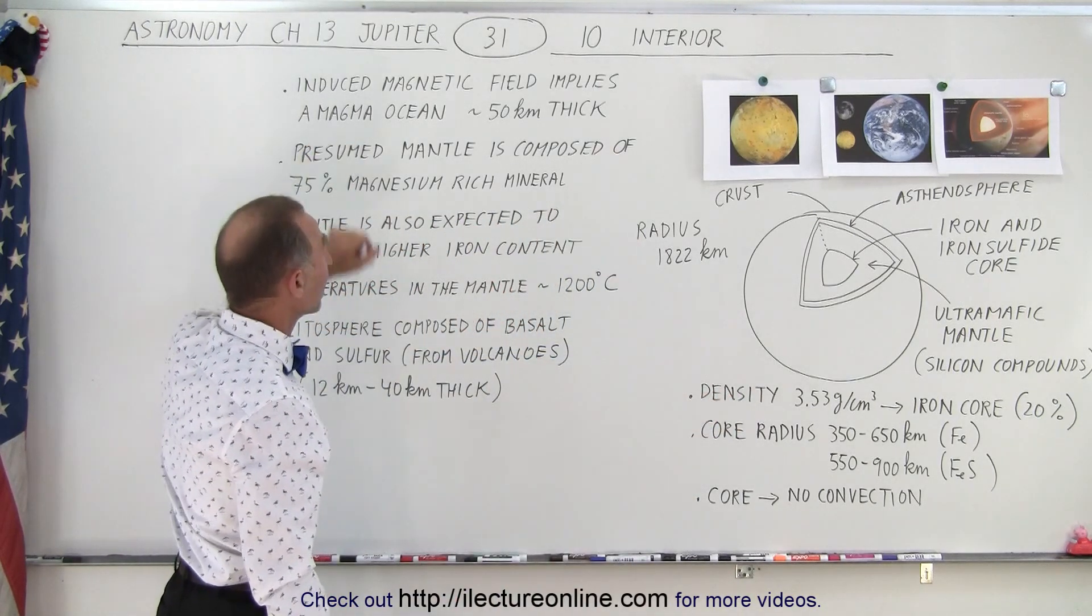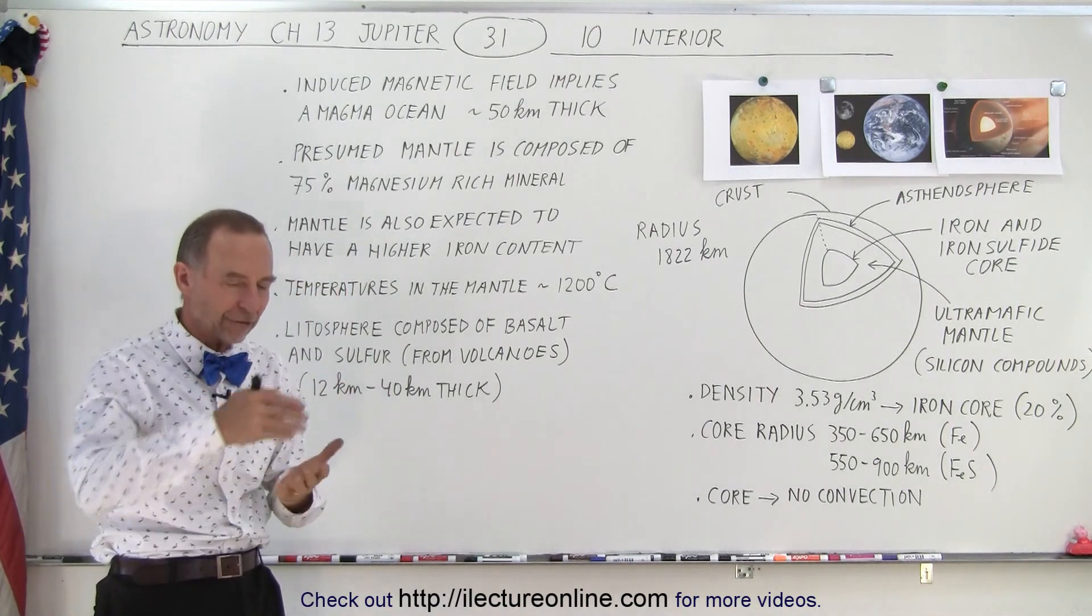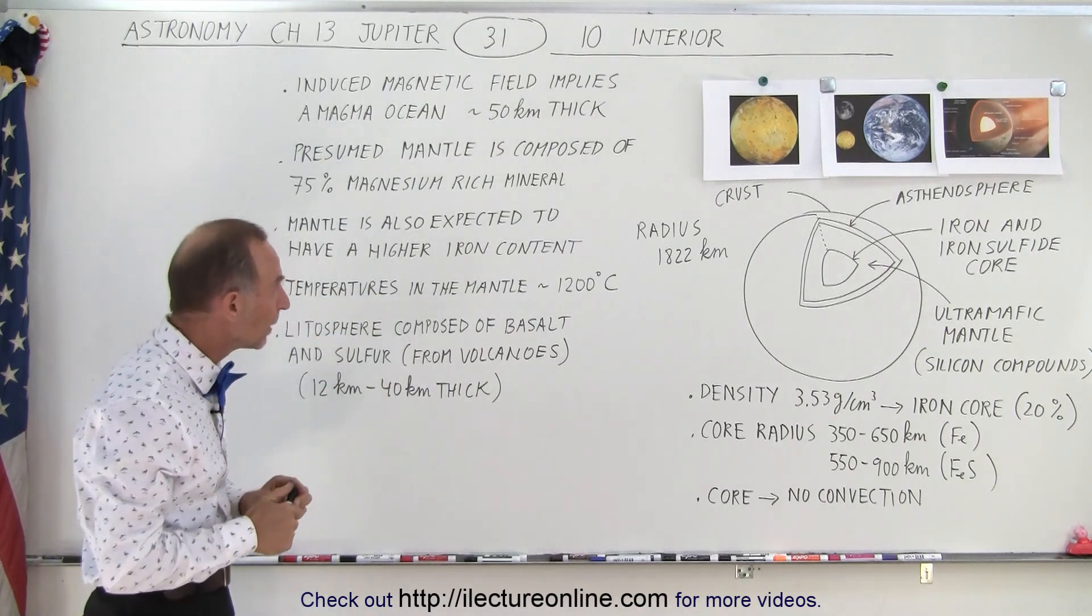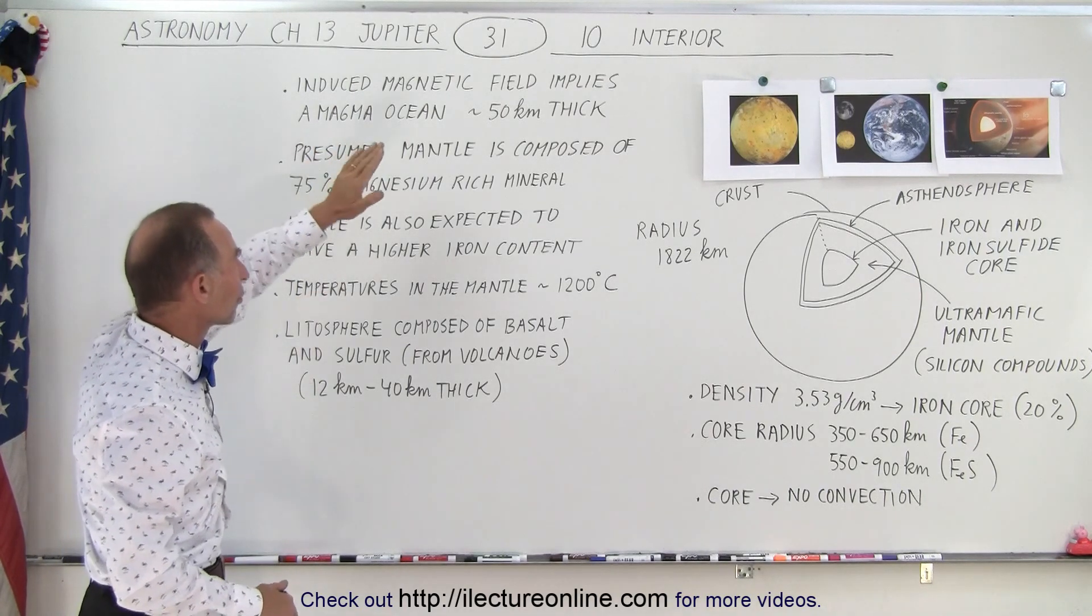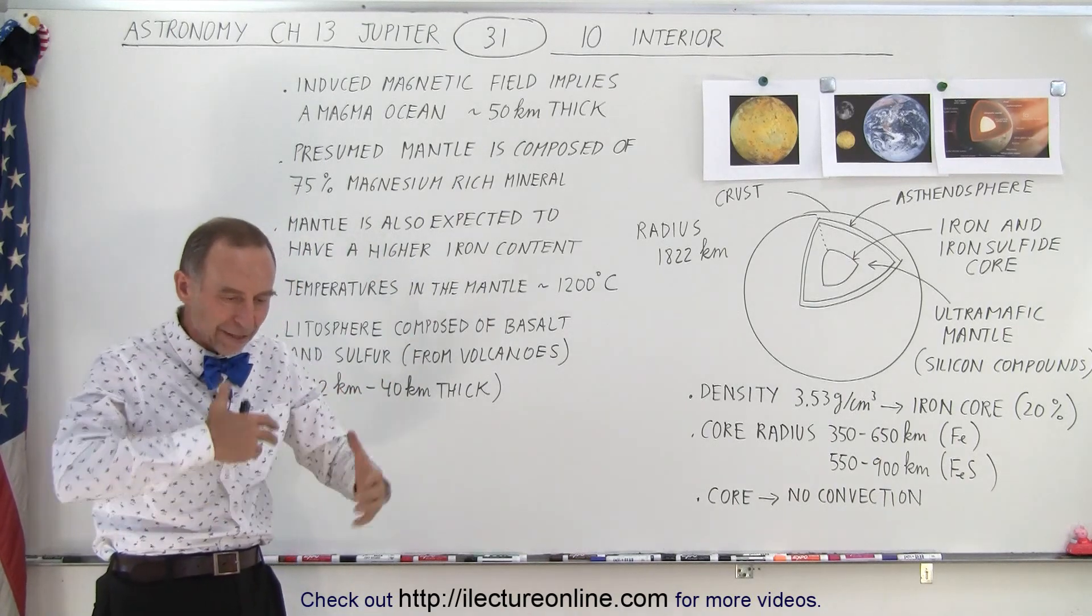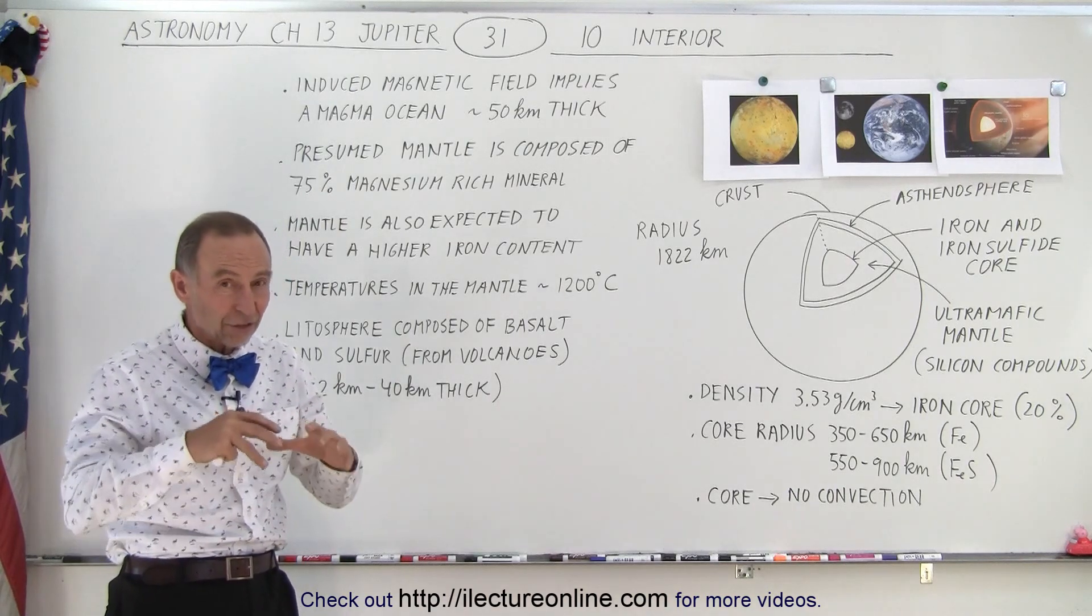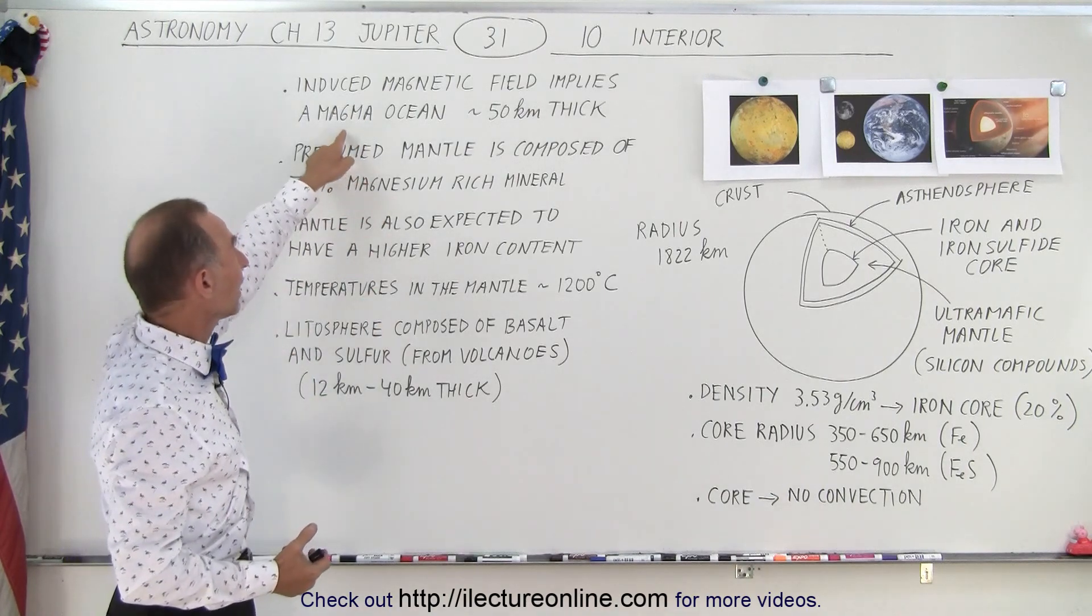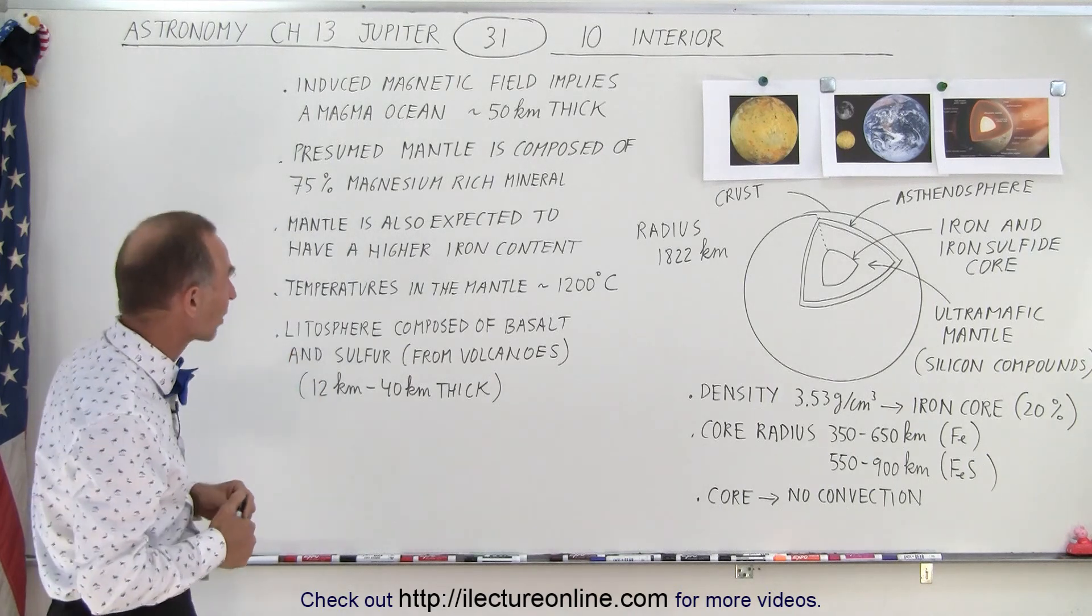We do know that there's an induced magnetic field because we can see it when we take measurements of the magnetic field as it enters and leaves the surface of Io. That implies there's a magma inside the mantle - a liquid kind of fluid material that is very hot, not solid, that moves around. That would be required for an induced magnetic field. If it was completely solid inside, we would not see that induced magnetic field.